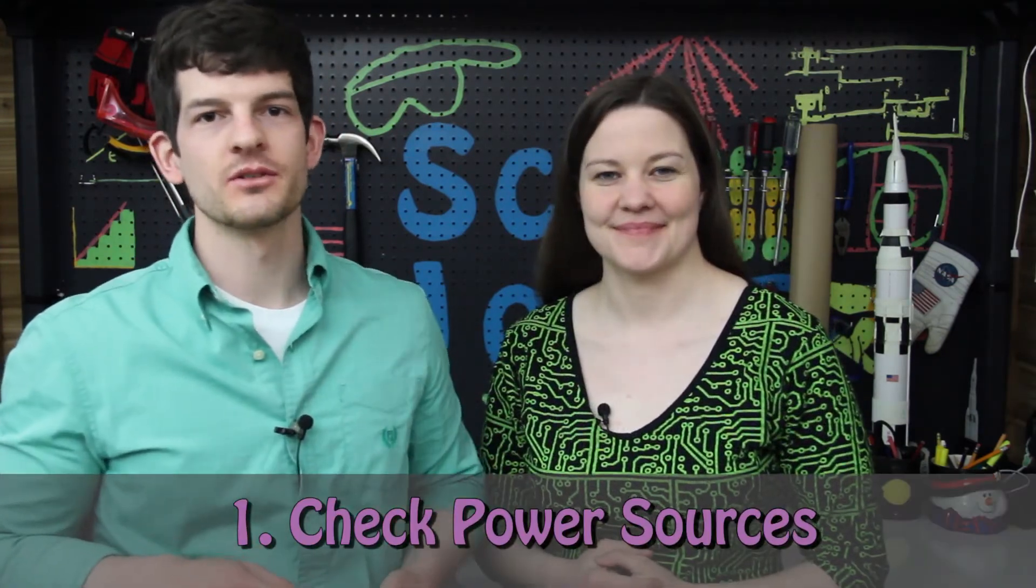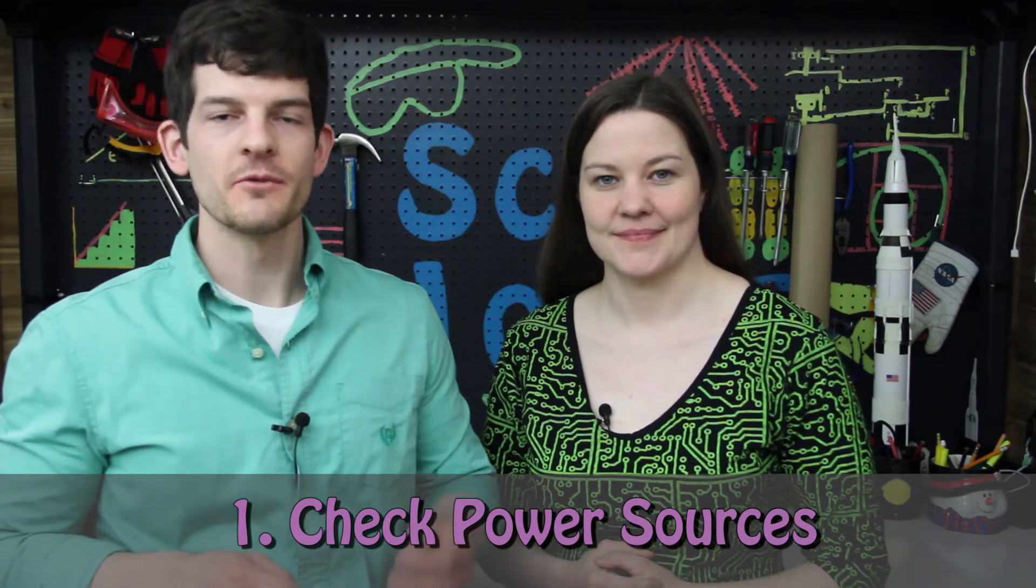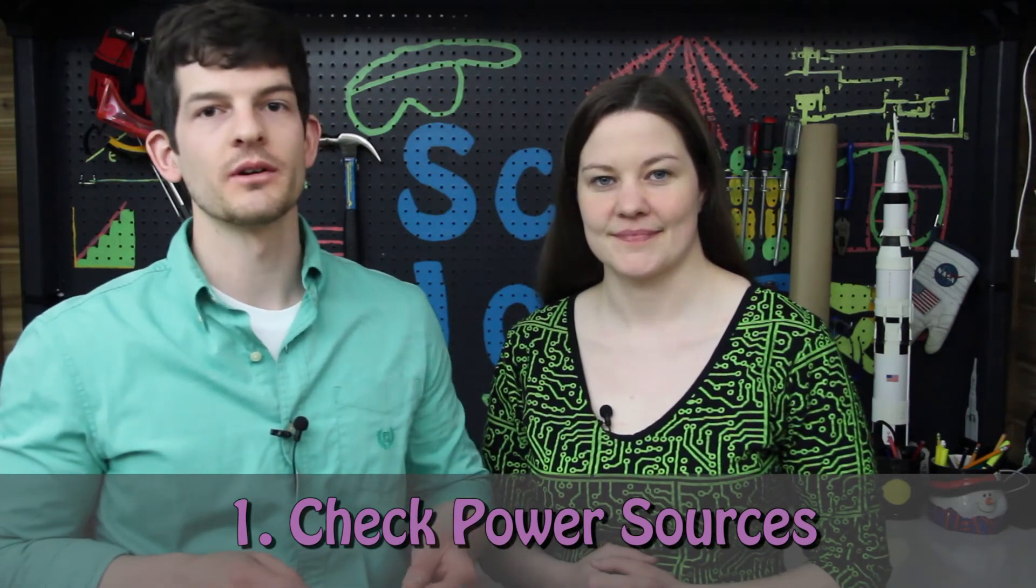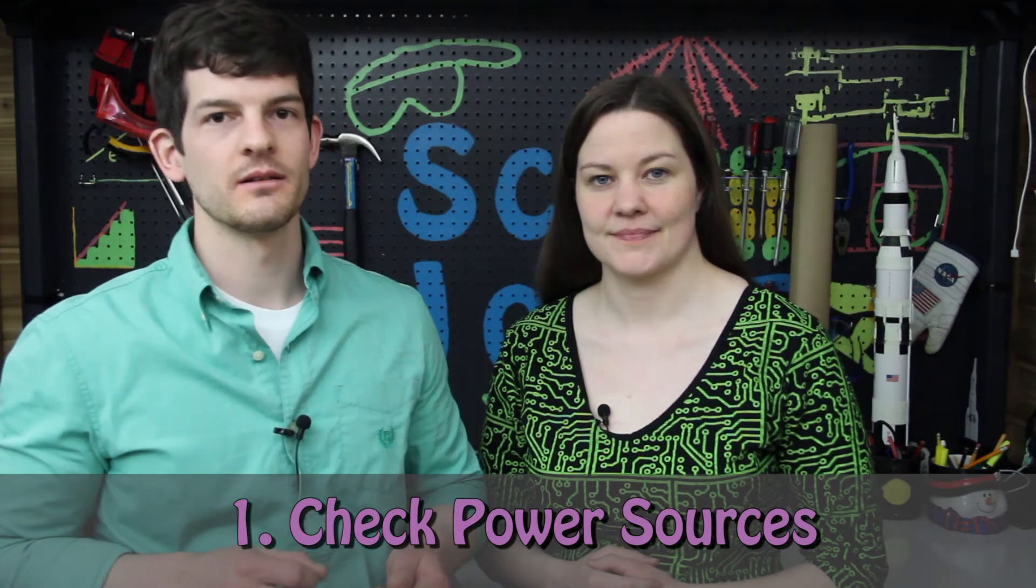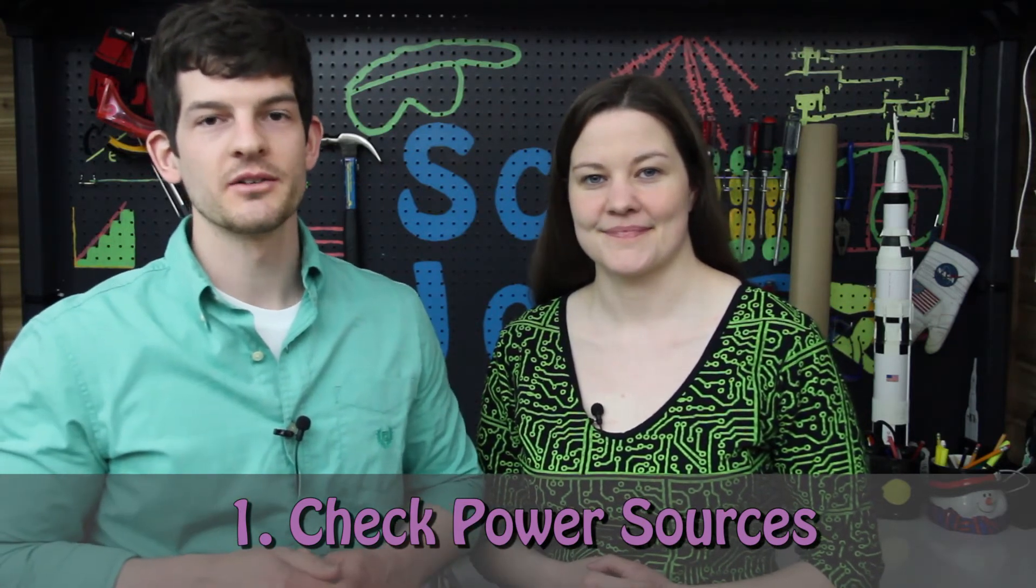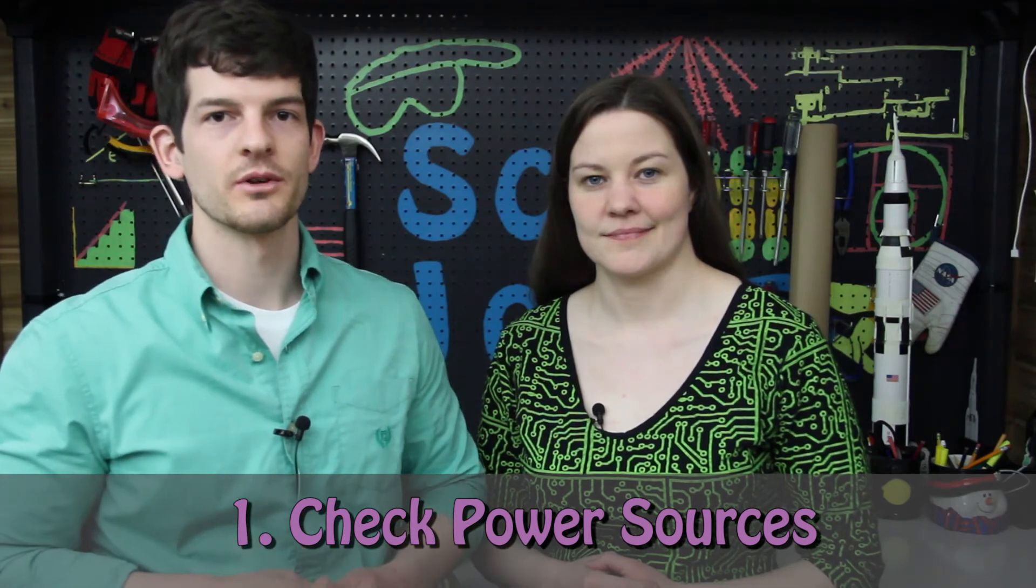Now let's talk about some general steps to use in troubleshooting your electronics projects. Before you turn it on, make sure that your sensors are plugged into the correct voltage source. Make sure that everything is connected. Make sure that your power is actually flipped on. And also check to make sure that you have voltage across your loads.